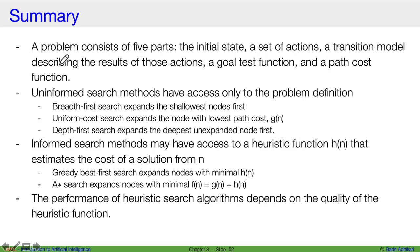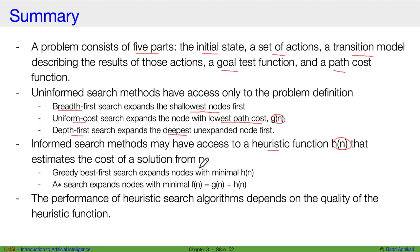In summary, a problem has five parts: initial state, set of possible actions, transition model, goal test function, and path cost function. Three uninformed search algorithms were discussed: BFS expands the shallowest node first; UCS expands the node with lowest path cost g(n); DFS expands the deepest node first. Informed search methods use a heuristic function h(n) estimating the cost from n to the goal. GBFS expands the node with minimum heuristic value. A*, the most powerful, expands the node with minimum g(n) + h(n). The better your heuristic function, the faster your algorithm converges to the optimal solution.